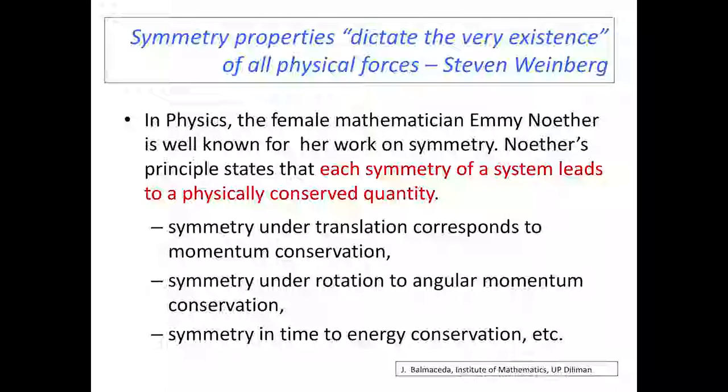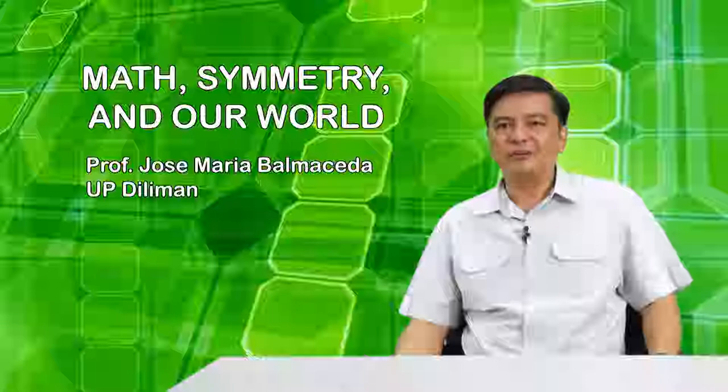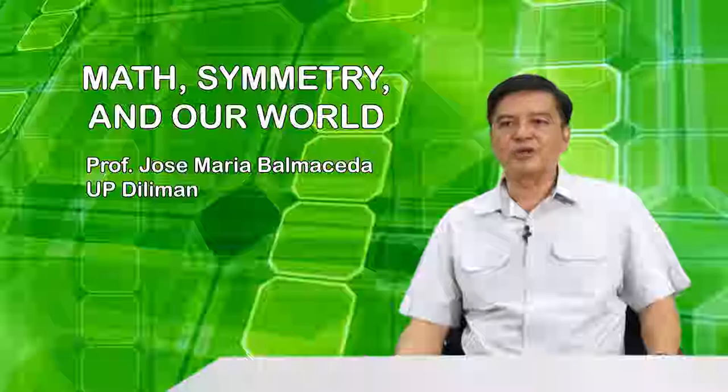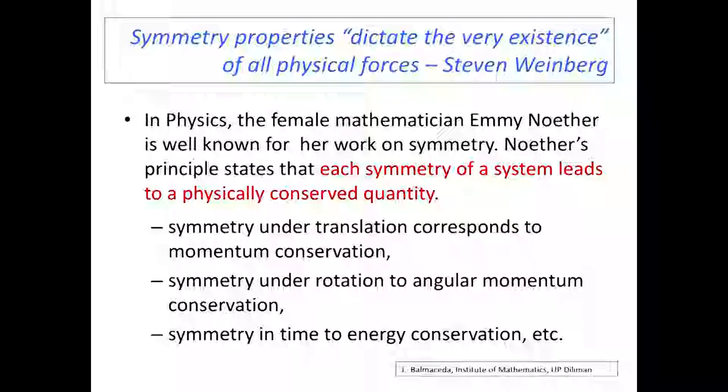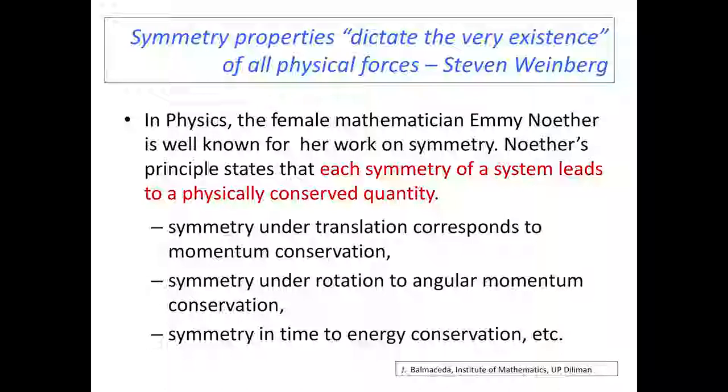In physics, the female mathematician Emmy Noether is well known. There are only a few female mathematicians who have made a big mark in mathematics development, and Emmy Noether was one of them. Noether's principle states that each symmetry of a system leads to a physically conserved quantity. For instance, when you talk about the conservation of momentum, you're really referring to symmetry under translations. If you want the conservation of angular momentum, then you're talking about symmetry under rotations. Symmetry in time corresponds to energy conservation.